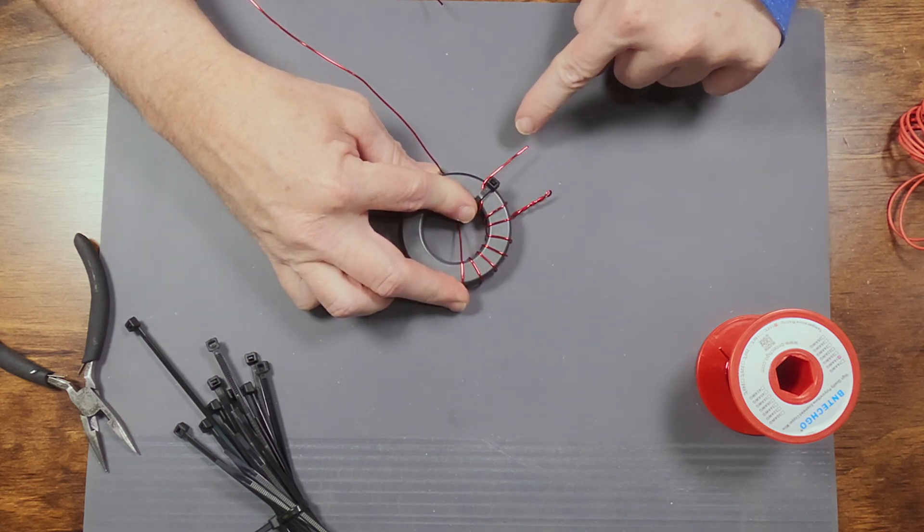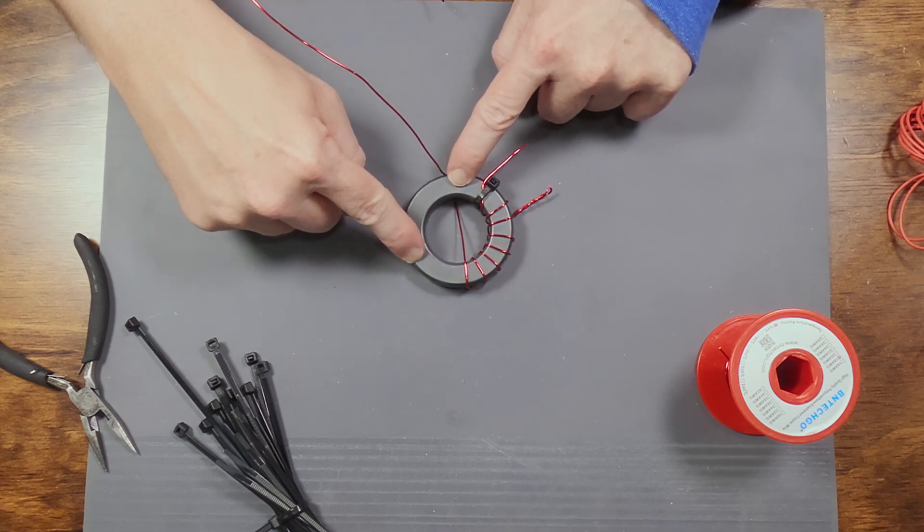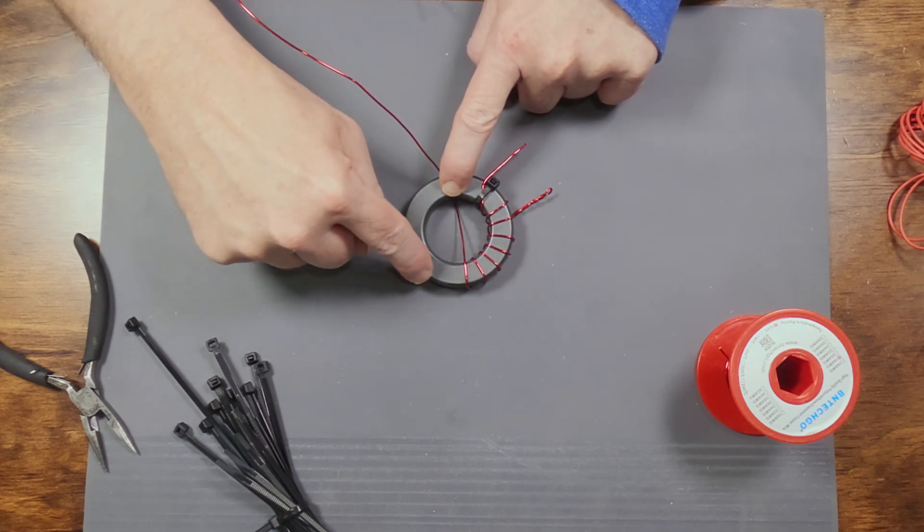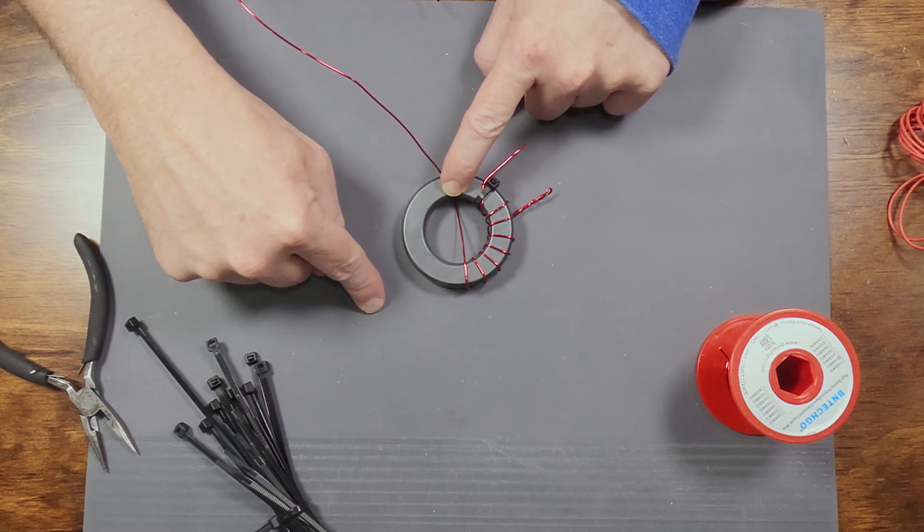The reason I'm doing the cross wrap is because right now, here's my gazin. I'm going to have the shield and the center pin of the coax. If I cross wrap and continue on this way, my gazout is going to be on the other side over here. It just makes it easier to put in a box.